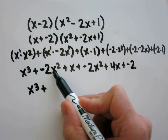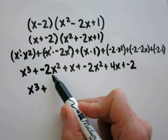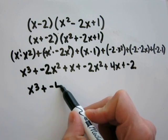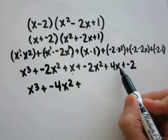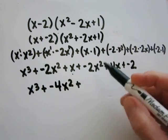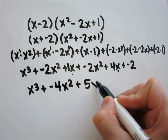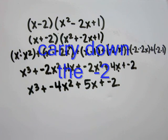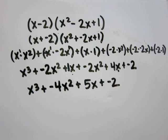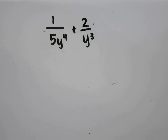I have negative 2x squared and negative 2x squared. Negative 2 plus negative 2 is negative 4, so that gives negative 4x squared. I have x and 4x — 1 plus 4 is 5 — so that becomes 5x. So my answer is x cubed plus negative 4x squared plus 5x plus negative 2, which is the same as letter C.